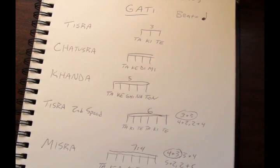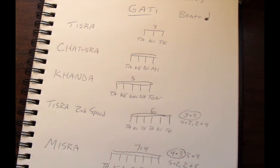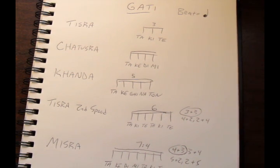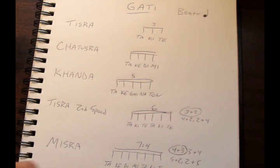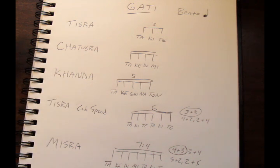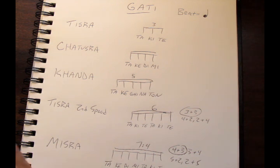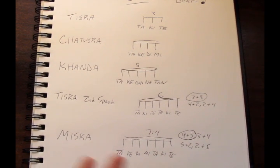These are the gatis we are going to be using. It's good practice to be able to switch back and forth between each gati using a metronome — for example, going back and forth between tisra and chatusra, or from a four-tuplet to a five-tuplet. It's also good practice to be able to switch back and forth between any of these combinations.